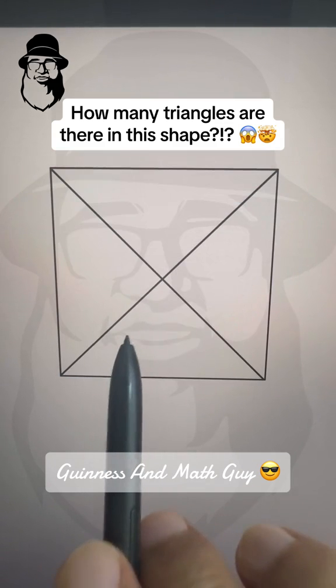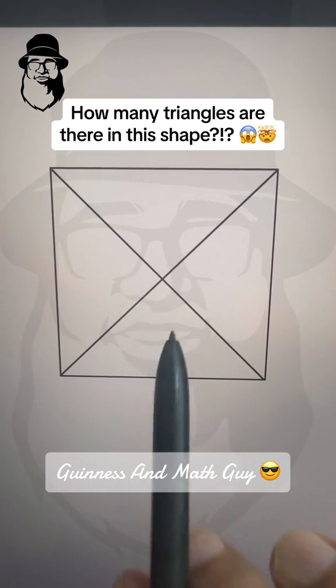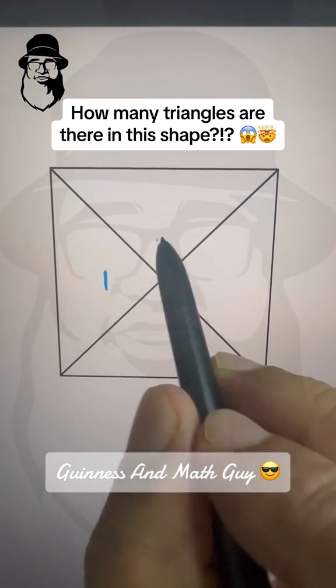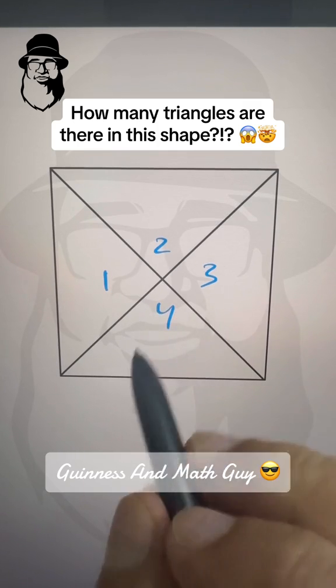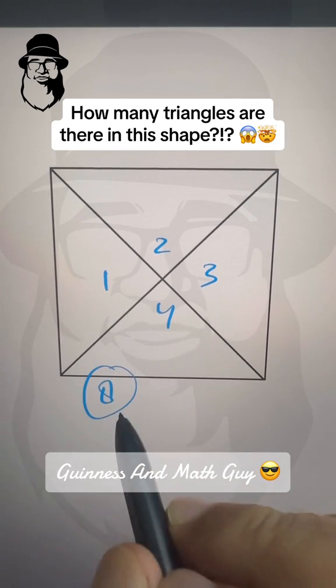If this is the question, how many triangles are in this shape, we'll count 1, 2, 3, 4, and double of 4 is 8. That's your answer.